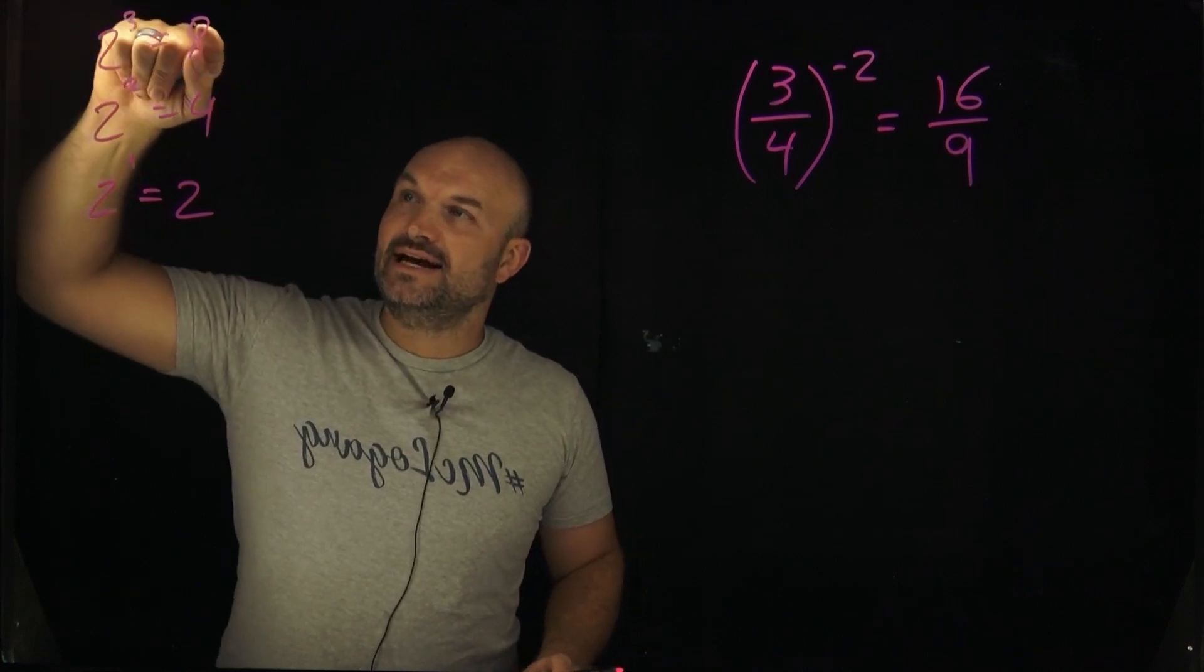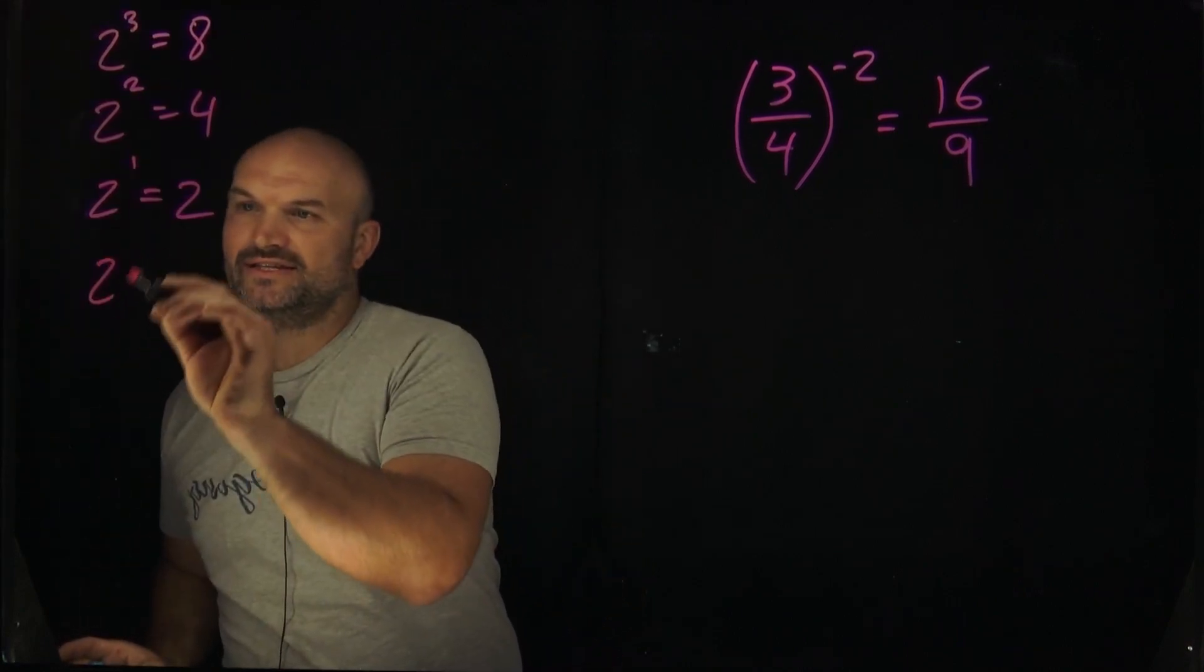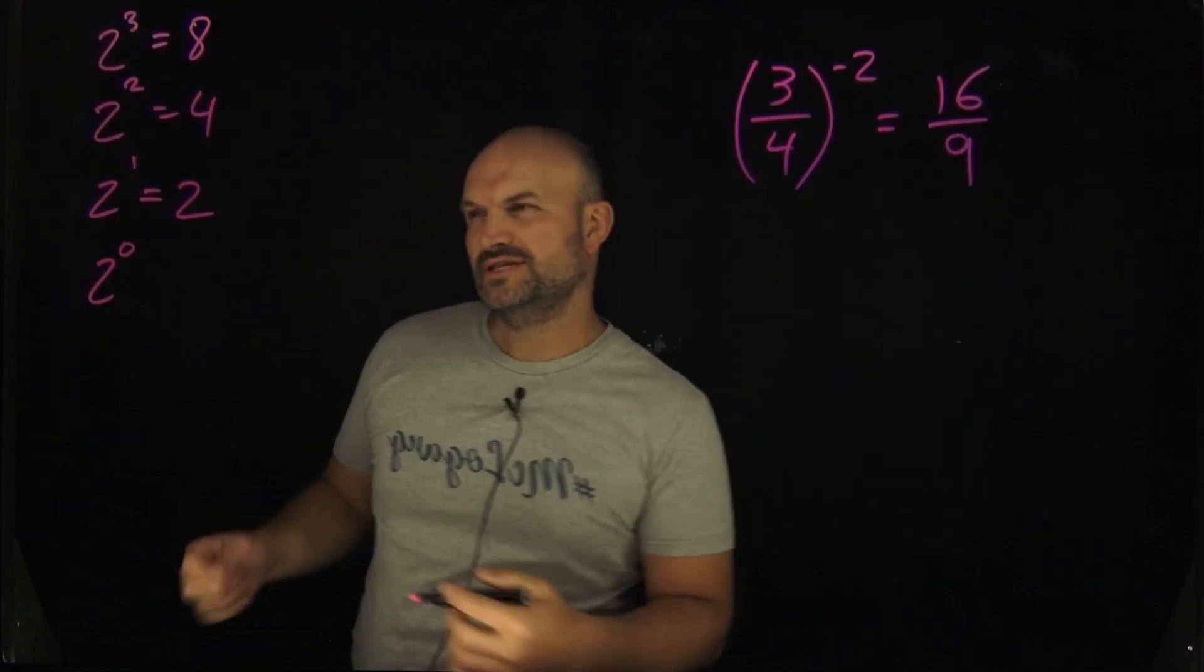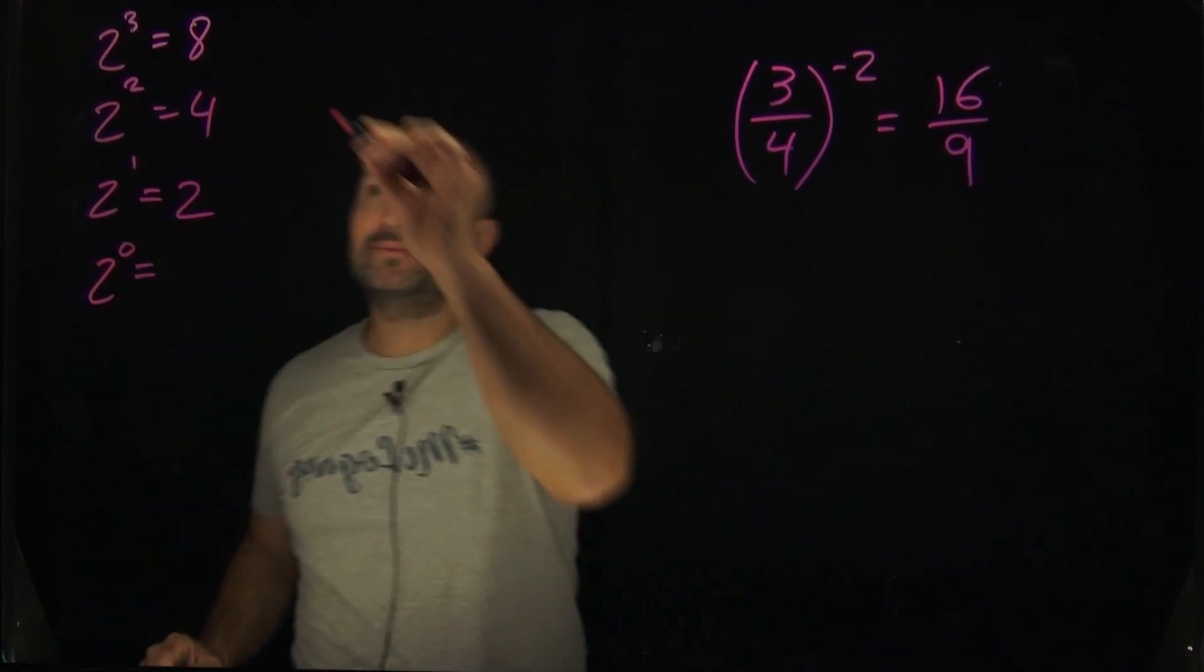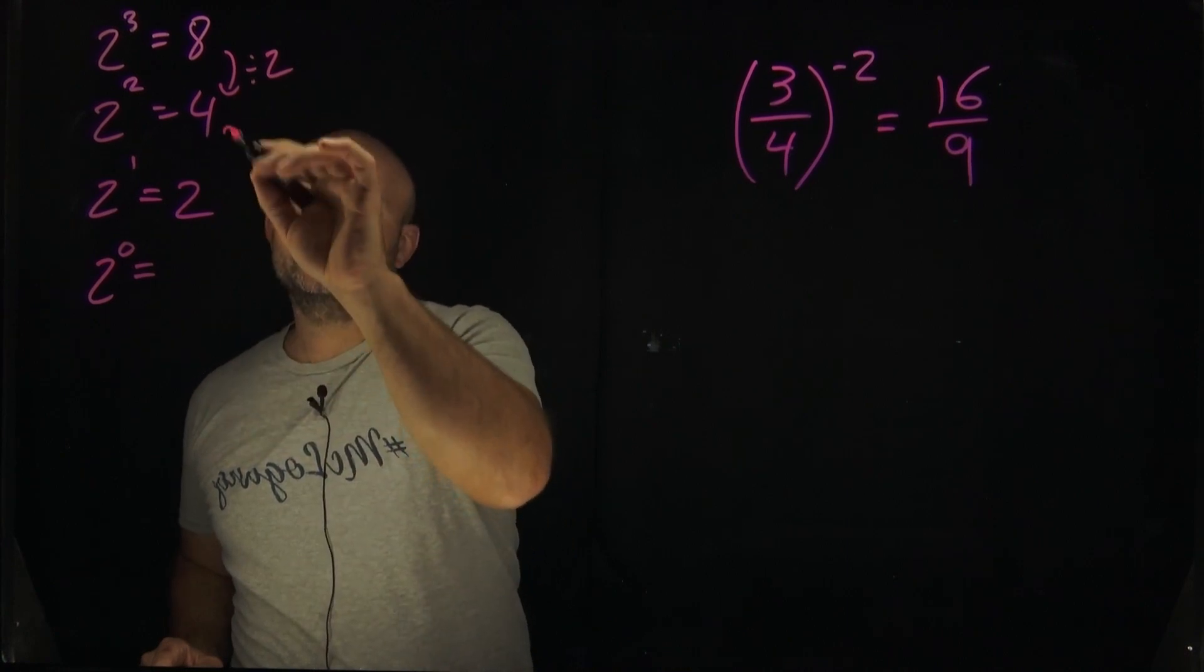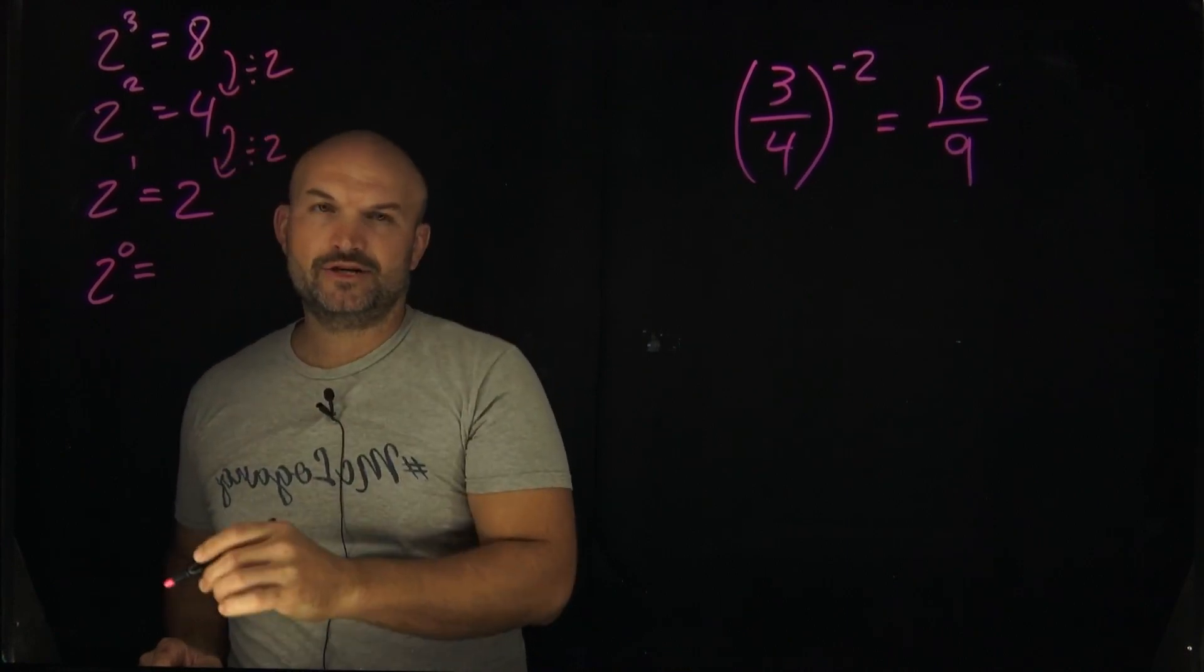In this case you can see, as I start working myself down, and this is one of those hard questions of like what's 2 to the 0? Well we can follow some patterns here. If I have 8, to go to 4, what am I doing? I'm dividing by 2. To go from 4 to 2, what am I doing? Divide by 2.